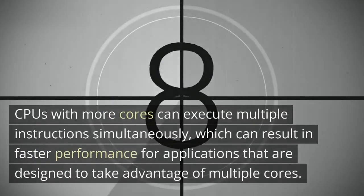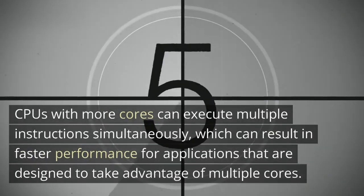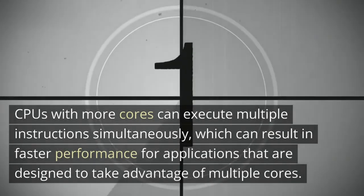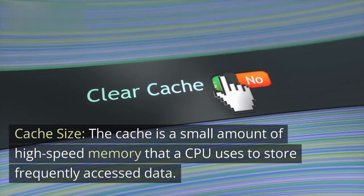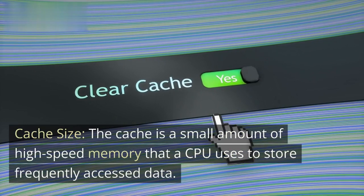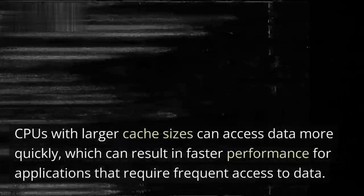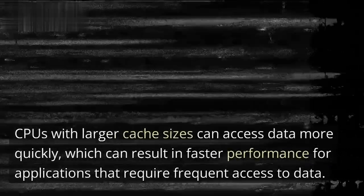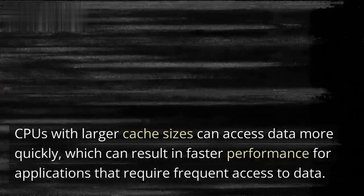CPUs with more cores can execute multiple instructions simultaneously, which can result in faster performance for applications designed to take advantage of multiple cores. Cache size: the cache is a small amount of high-speed memory that a CPU uses to store frequently accessed data. CPUs with larger cache sizes can access data more quickly, resulting in faster performance for applications that require frequent data access.